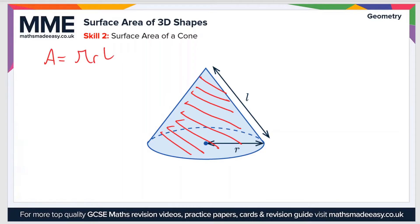So that gives us the area of the curved face. And then we also need the area of the circular face on the bottom. And once again, the area of a circle is pi R squared. So the total area of the cone equals pi RL plus pi R squared.